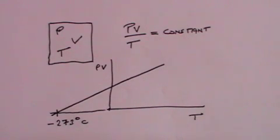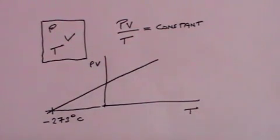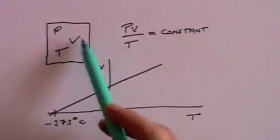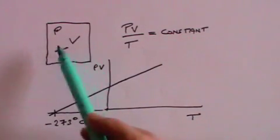Now is pressure times volume divided by temperature an absolute constant? Well, obviously not, because it must depend on how much gas you actually have.